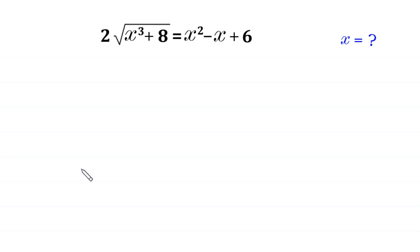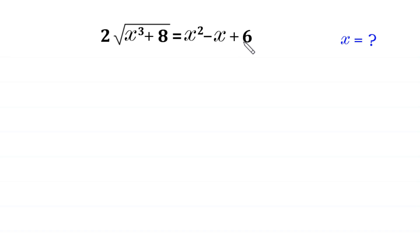Hello, welcome to how to solve this very nice radical equation. 2 times square root of x cubed plus 8 is equal to x squared minus x plus 6. We need to find all possible values of x.